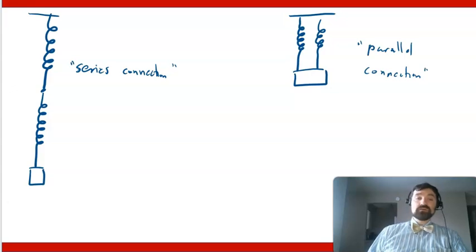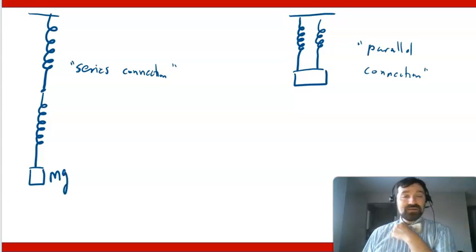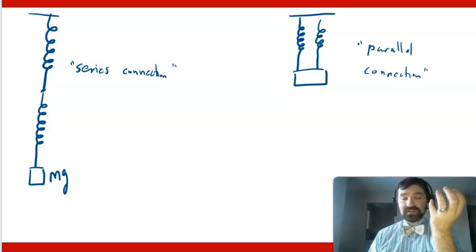Well, assuming ideal springs, one property of ideal springs is that the mass is negligible for the spring itself. And so I've put mg down here. And that means that this spring has to essentially apply mg upward on this spring plus mass. And this spring also has to apply mg upward on this mass. And so both springs stretch by delta x.